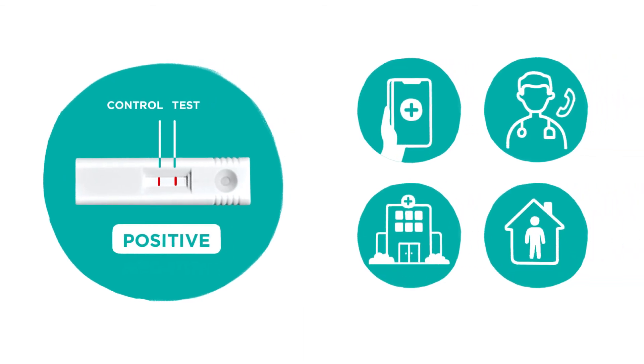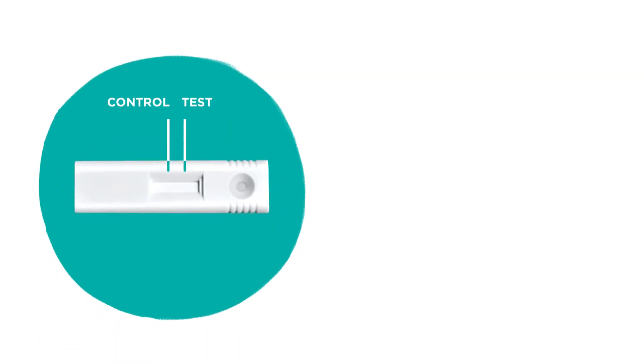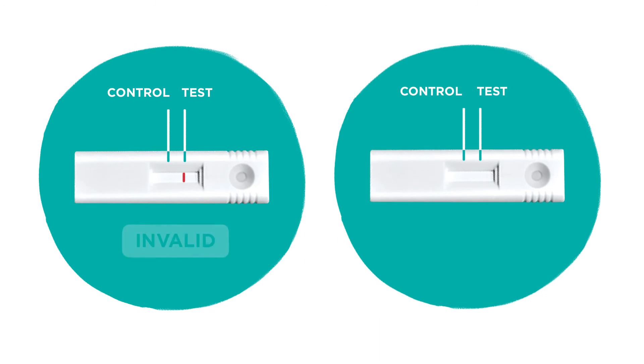it's important that confirmatory testing is conducted immediately and the patient follows self-isolation guidelines. The test result is invalid if no control line is present. This is true even if the test line is present without a control line. The control line must appear to indicate the test was performed correctly.